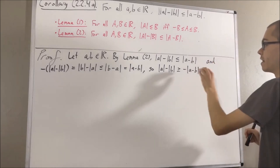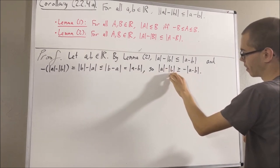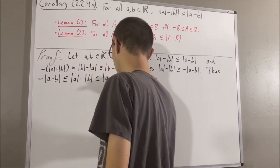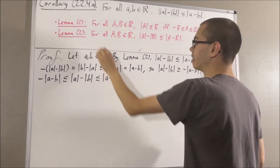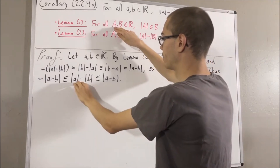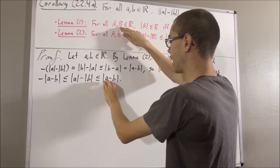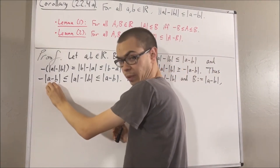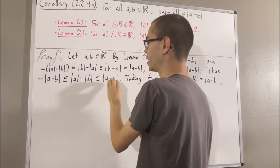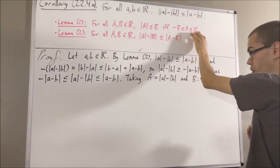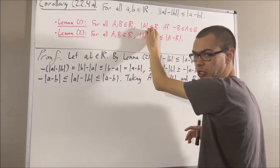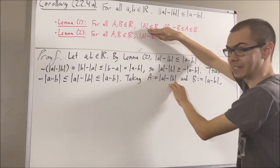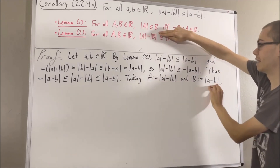So we see that the negative of the absolute value of a minus b is less than or equal to the absolute value of a minus the absolute value of b, which is less than or equal to the absolute value of a minus b. Now we apply Lemma 1, taking capital A to be the absolute value of a minus the absolute value of b, and capital B to be the absolute value of a minus b. We see that negative capital B is less than or equal to capital A, which is less than or equal to capital B. Since this is true, by Lemma 1, the absolute value of capital A is less than or equal to capital B — in other words, the absolute value of the absolute value of a minus the absolute value of b is less than or equal to the absolute value of a minus b.